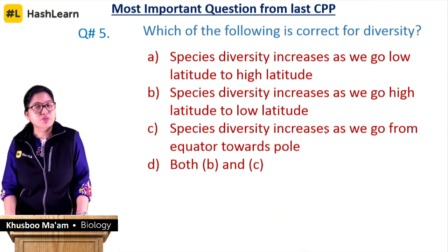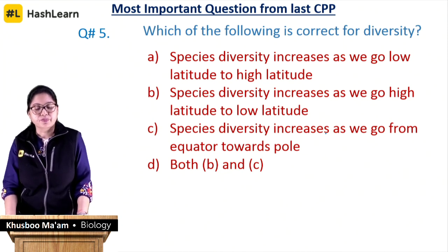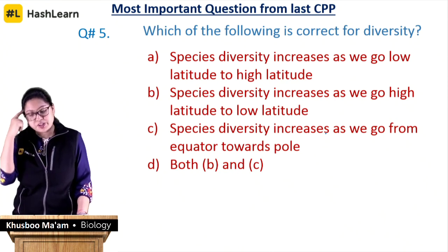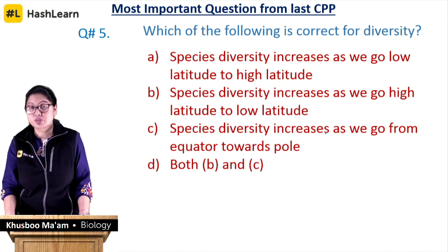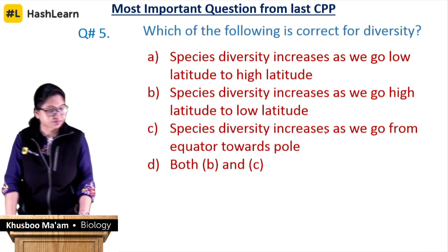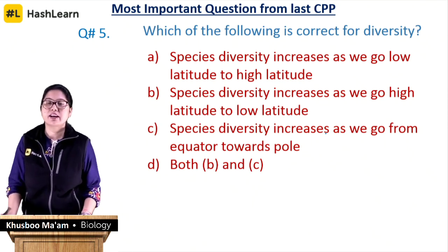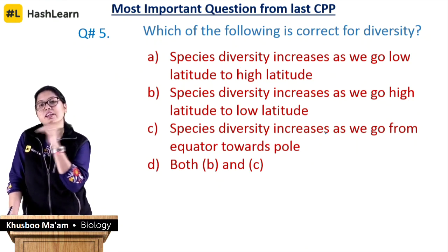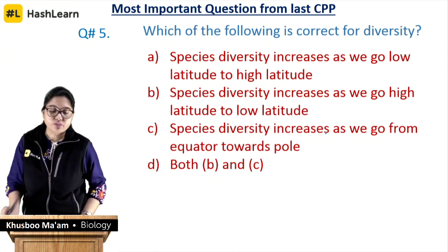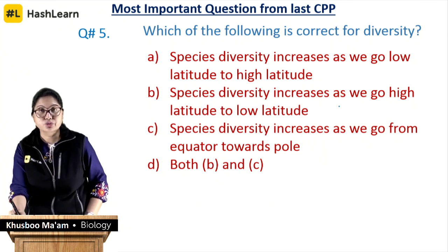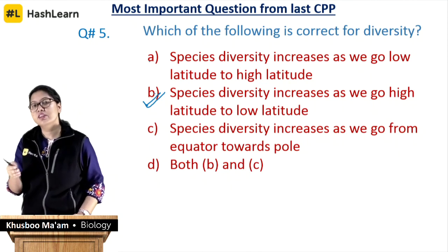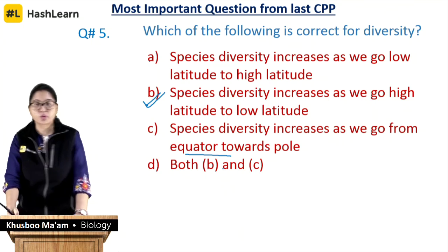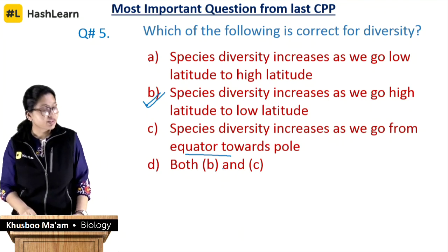Here is a question from the CPP: which of the following is correct for diversity? A — species diversity increases as we go from low latitude to high latitude; B — species diversity increases as we go from high latitude to low latitude; C — species diversity increases as we go from equator towards the pole; D — both B and C. Low latitude means closer to the equator, high latitude towards the pole. Species diversity increases from high latitude to low, i.e., from pole to equator. So A and C are wrong, and B is the correct answer.